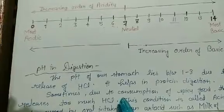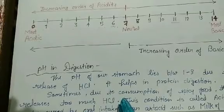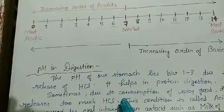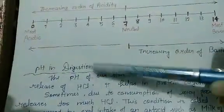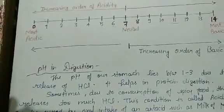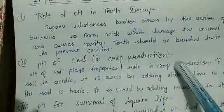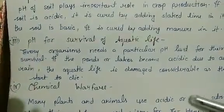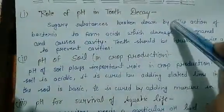Now it's time to discuss the importance of pH in our everyday life. We are going to learn about 5 topics: pH in Digestion, the role of pH in Tooth Decay, role of pH in Crop Production, pH for the Survival of Aquatic Life, and Chemical Warfare. Let's start with the role of pH in Tooth Decay.